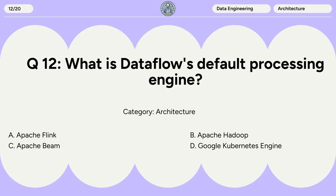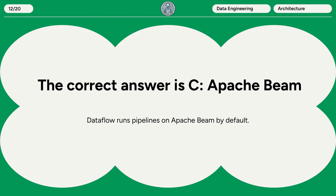Question 12: What is Dataflow's default processing engine? A. Apache Flink. B. Apache Hadoop. C. Apache Beam. D. Google Kubernetes Engine. The correct answer is C. Apache Beam. Dataflow runs pipelines on Apache Beam by default.